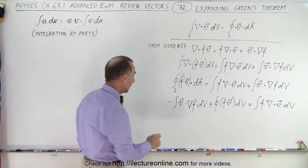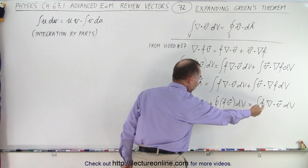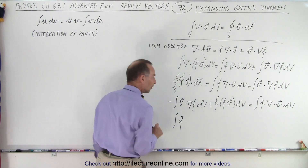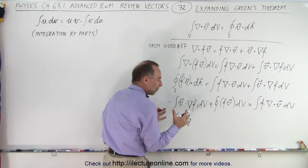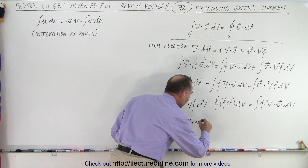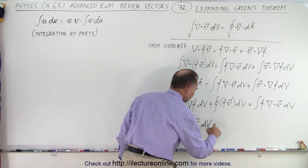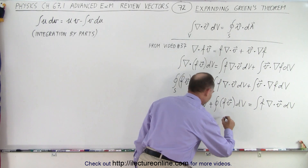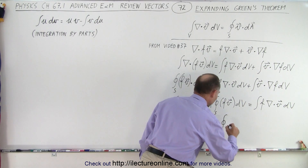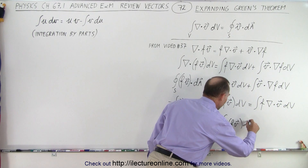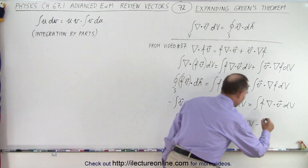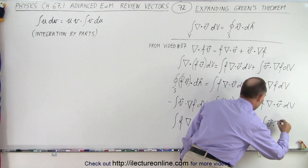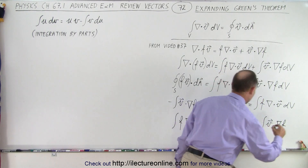Now if we turn the whole equation around and write this part first, we have the integral of the function times the divergence of V dV is equal to the surface integral of f times V dA, minus the integral of V times the gradient of f dV.